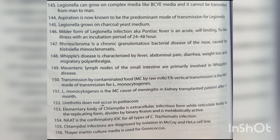Rhinoscleroma is a chronic granulomatous bacterial disease of the nose caused by Klebsiella rhinoscleromatis. Whipple's disease is characterized by fever, abdominal pain, diarrhea, weight loss, and migratory polyarthralgia; mesenteric lymph nodes of the small intestine are primarily involved. Transmission by contaminated food (most commonly raw milk) followed by vertical transmission is the most common mode for Listeria monocytogenes, which is also the most common cause of meningitis in kidney-transplanted patients after one month. Urethritis does not occur in cytokosis. The elementary body of Chlamydia is the extracellular infectious form, while the reticulate body is the replicating form that divides by binary fission and is metabolically active. NA18 is the confirmatory investigation for all types of Chlamydia trachomatis infection.